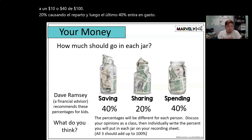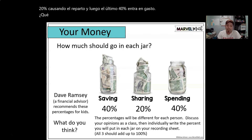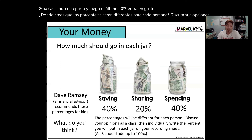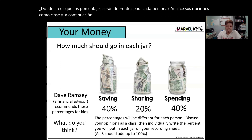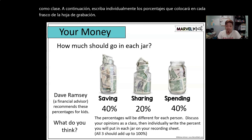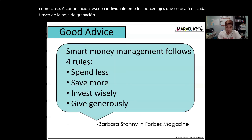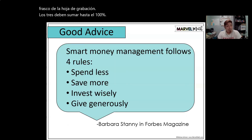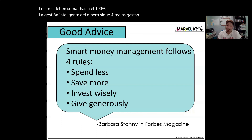What do you think? The percentages will be different for each person. Discuss your options as a class, then individually write the percentages you will put in each category on your recording sheet — all three should add up to 100%. Smart money management follows four rules: spend less, save more, invest wisely, and give generously.